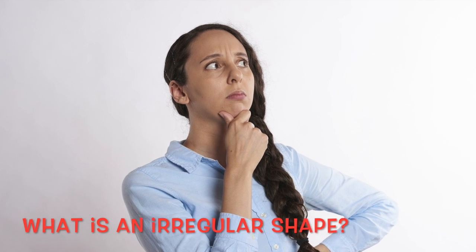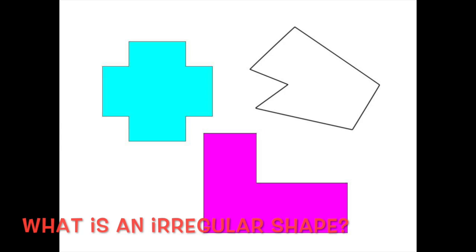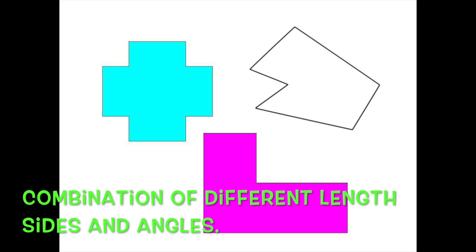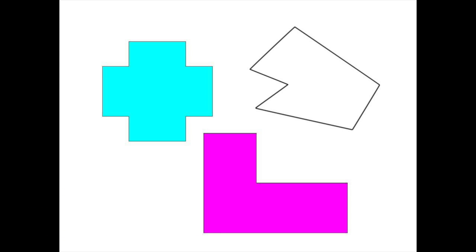First, what does it mean to be an irregular shape? Irregular shapes have a combination of sides and angles that are different sizes and lengths. They are easy to pick out because they don't look like what we consider a normal shape. Here are some examples.